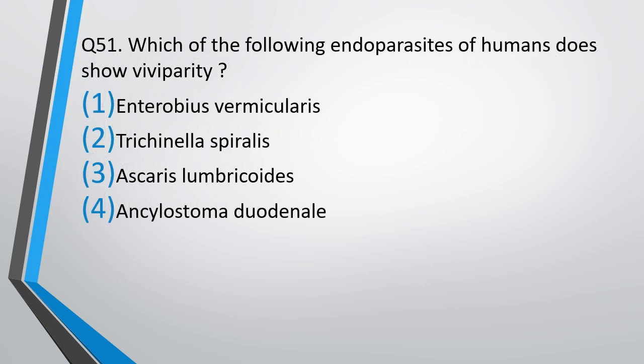Question number 51. Which of the following endoparasites of humans shows viviparity (VV parity)? Enterobius vermicularis, Trichinella spiralis, Ascaris lumbricoides, or Ancylostoma duodenale — all of these are nematodes. Viviparity means giving birth to larvae. The correct answer is option 2 — Trichinella spiralis shows viviparity.